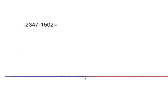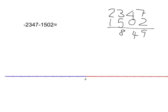Now if I'm faced with something like this, negative 2,347 minus 1,502, I can use my knowledge of positive numbers to help me get this quickly. So, I know that if I take 2,347 and I add on 1,502, I'm going to end up with 3,849. How does that help me get the negatives?